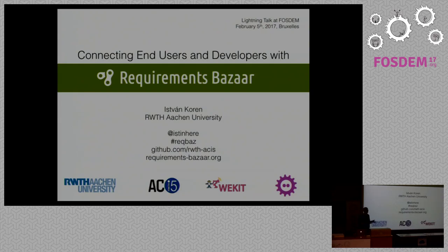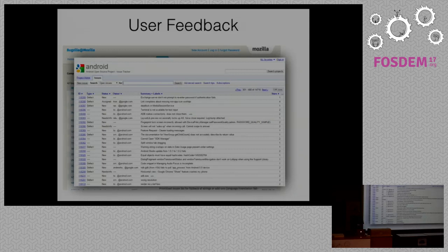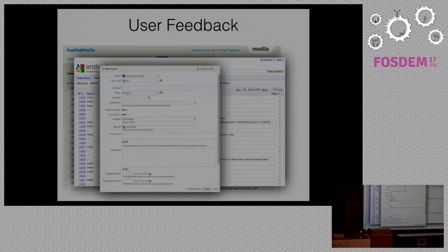The usual idea is just let the user send emails or make a discussion forum, but that doesn't really scale. What people in the open source world do is use issue trackers. For example, this is a screenshot from Mboxzilla, but it's not really end-user friendly — things like 'refactor string bundle JS' are really confusing. We also tried sending people to GitHub issues, but they saw the files and the code and were turned off and just closed it. We also tried Jira, but they were overwhelmed by the number of fields you have to fill in.